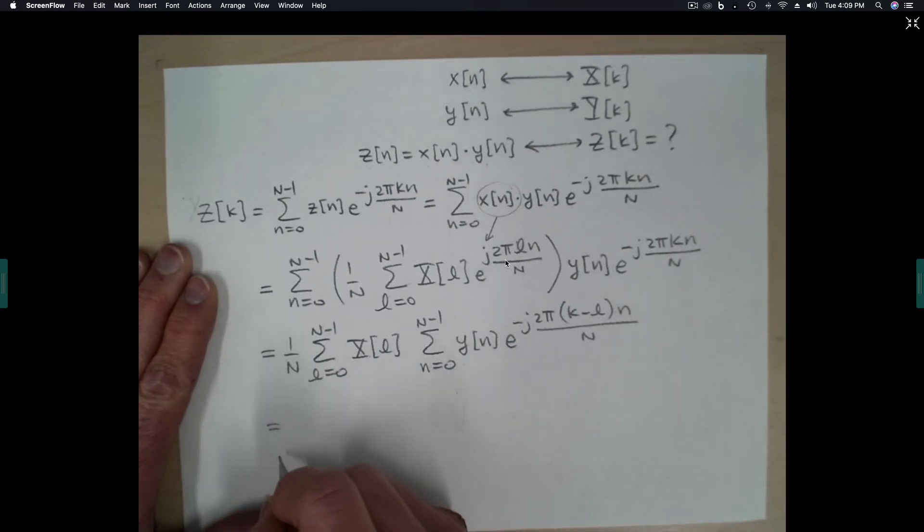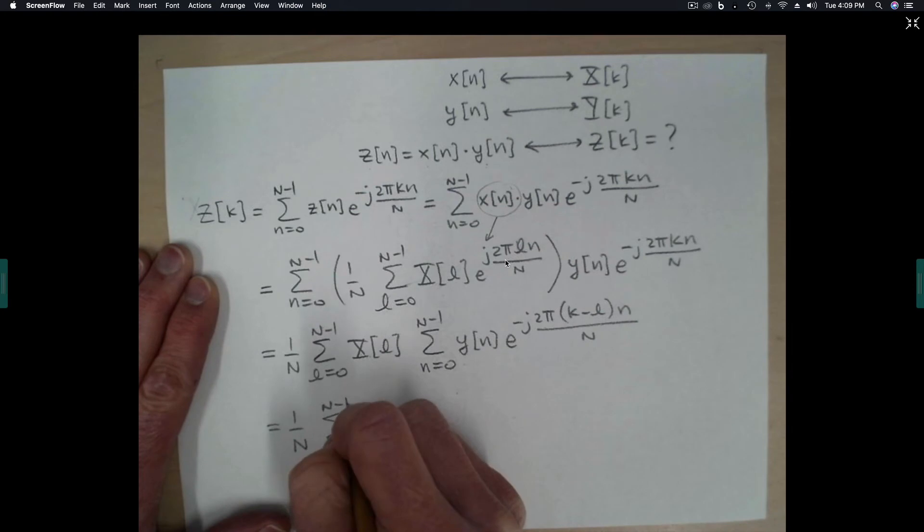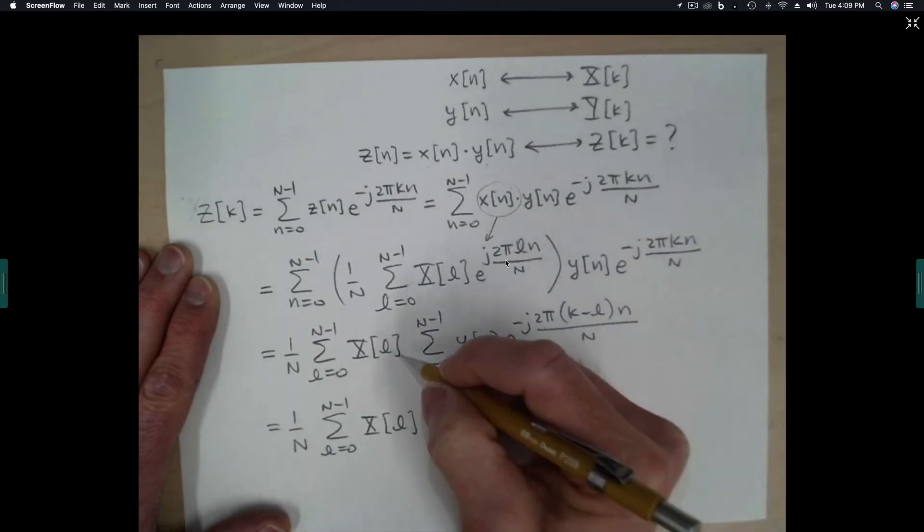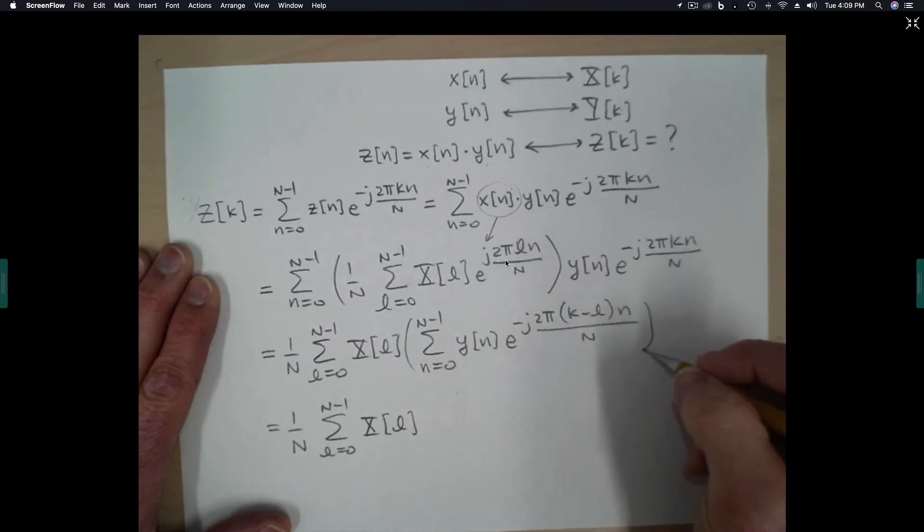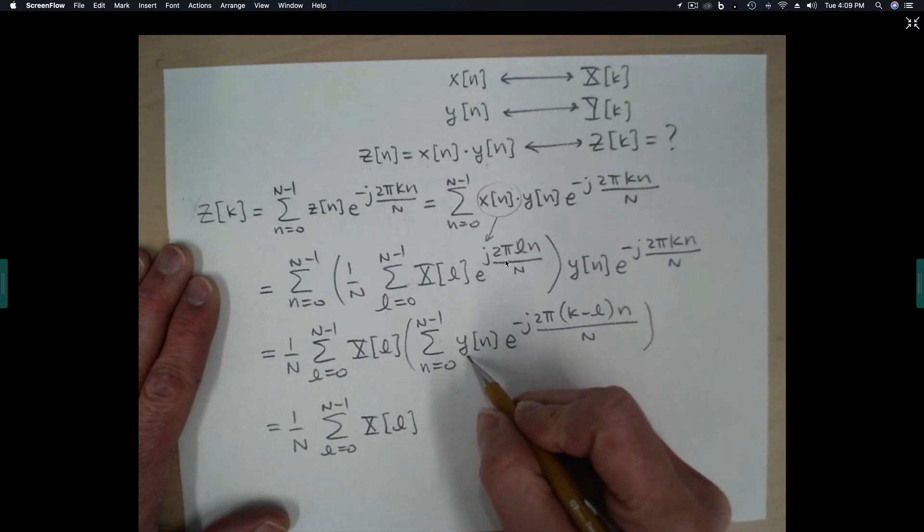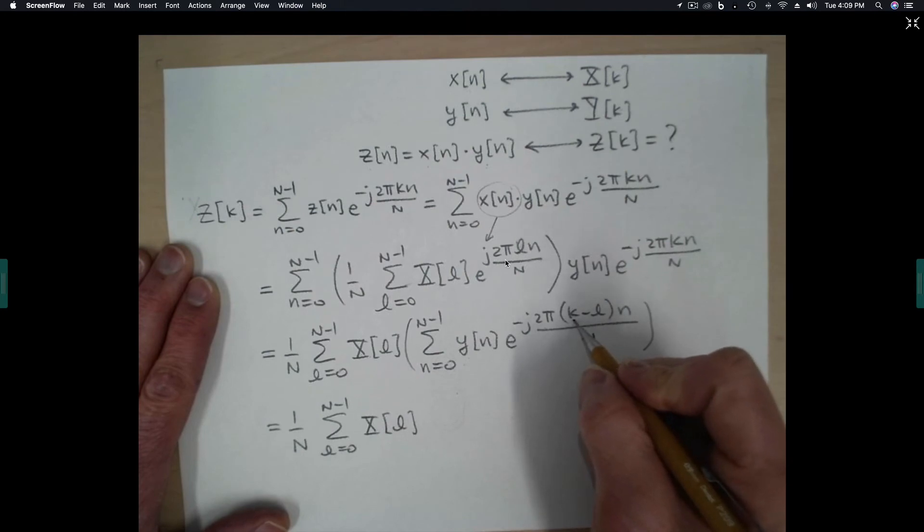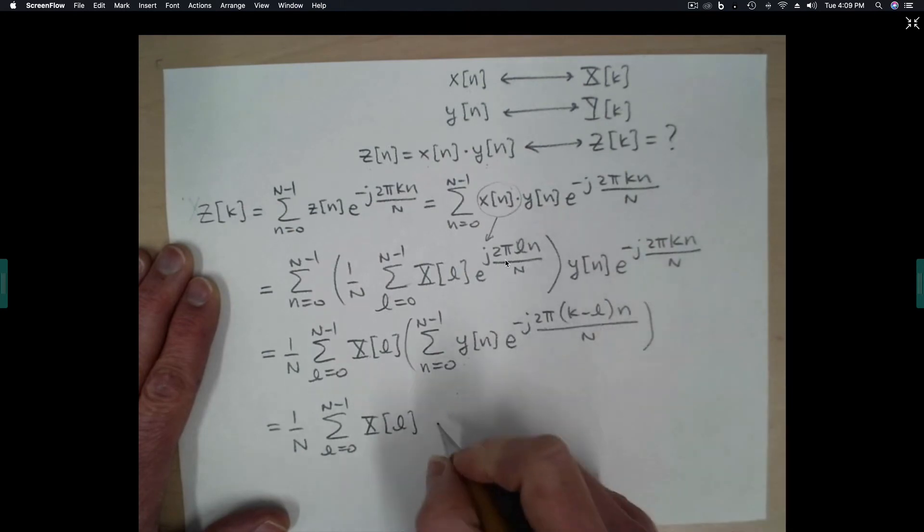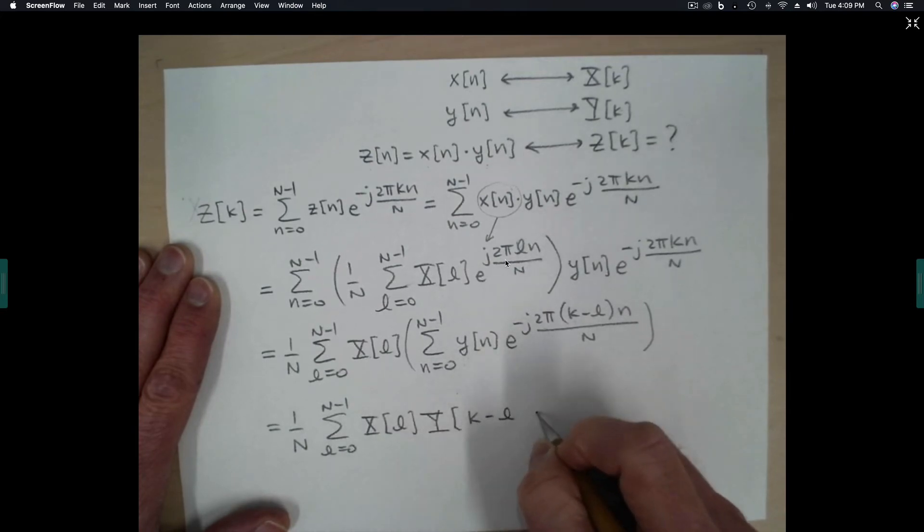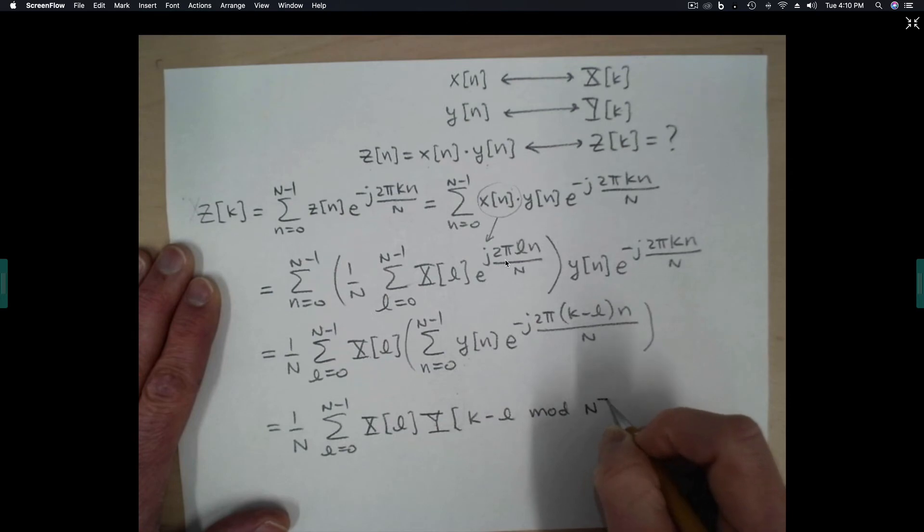Now we have something that begins to look like convolution, because this piece in parentheses here looks like the definition of the DFT of y, so it would be y(k), but instead of evaluating at k, we're going to evaluate at k minus L.